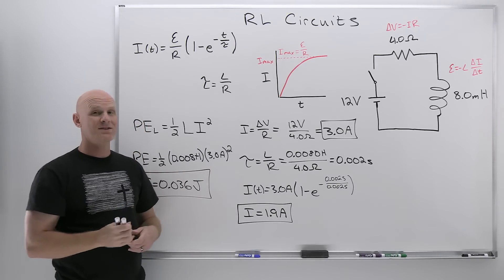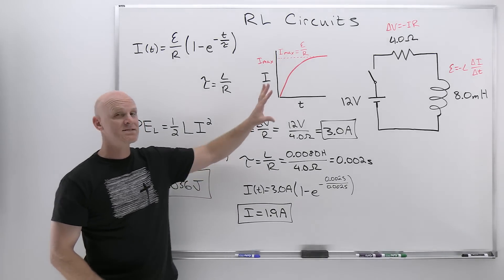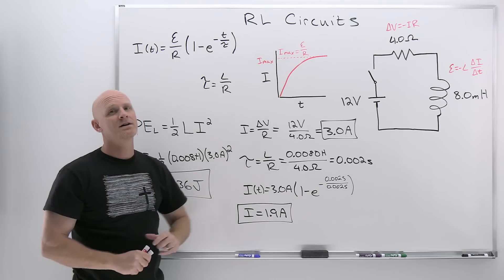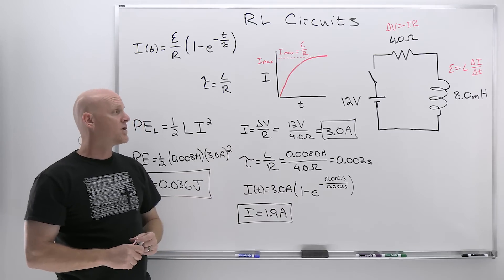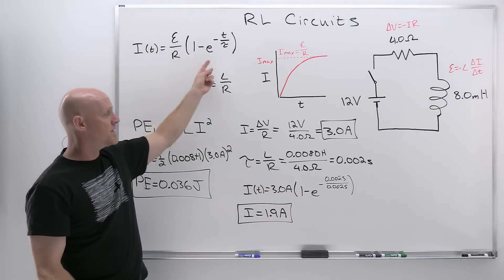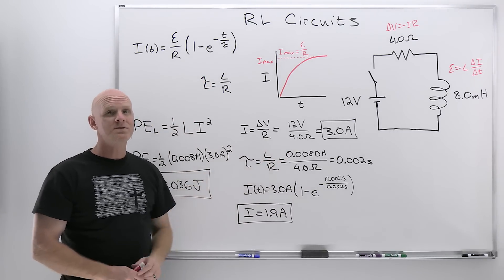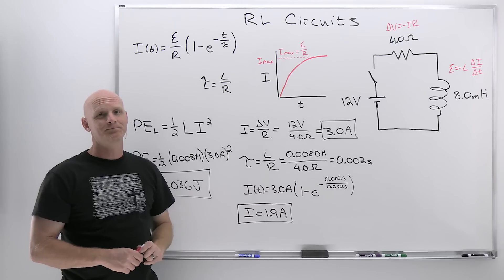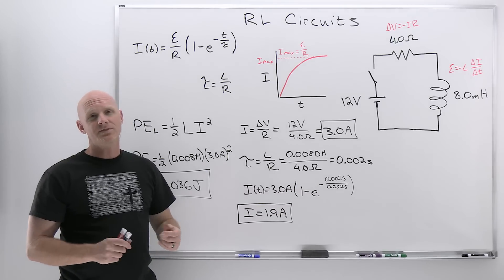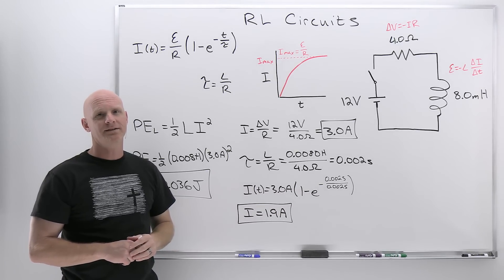That's an example of just about all the calculations you might see involving an RL circuit. The hardest part is definitely the time dependence, but the numbers were kept nice. If you found this lesson helpful, consider giving it a like. Happy studying.